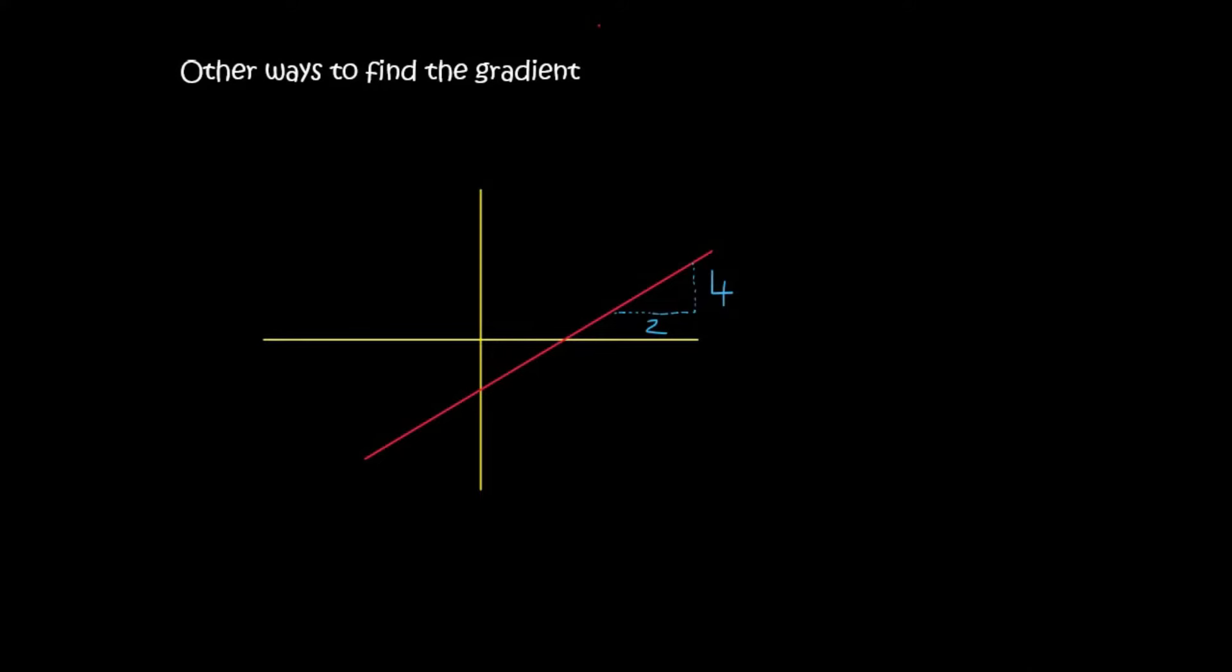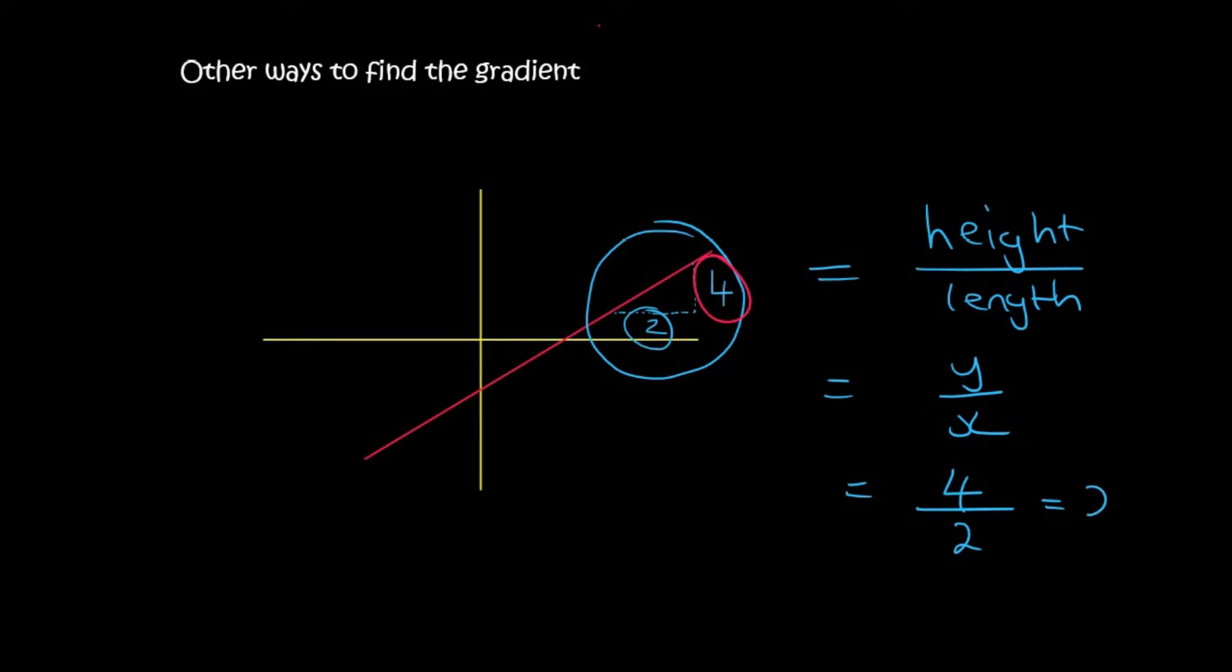If you ever get a question like this where they give you a triangle like that on the line, then all you have to remember is height over length, or you could even remember y over x. So the y value or the height is 4 and then the length or the x value is 2, and so the gradient there is 2.